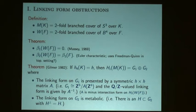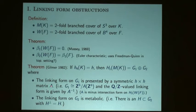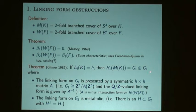G1 has the property that it's presented by an H-by-H matrix — that is, G1 is Z^H mod A times that, and the linking form on the three-manifold is presented by A-inverse. The other part of the homology, G2, is metabolic, meaning there's a subgroup in that group on which the linking form vanishes — it's perpendicular to itself with respect to the linking form.